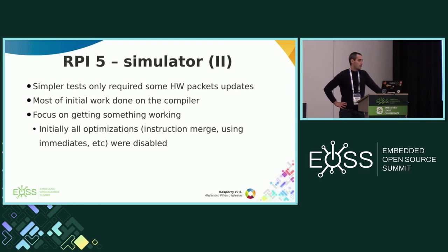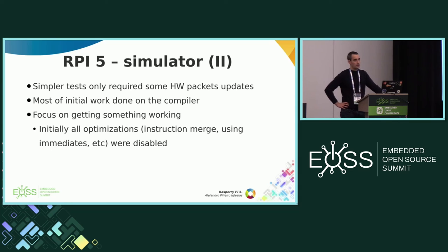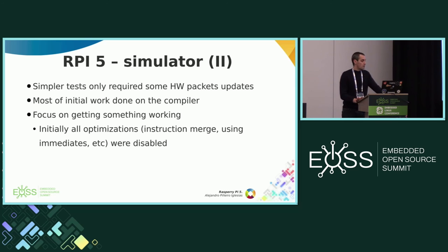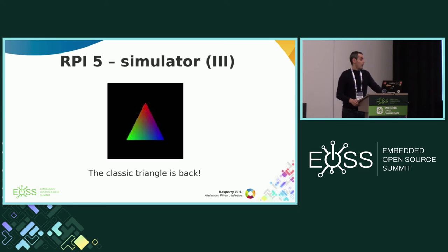Even after the simpler tests only required some hardware packet updates, it still required a lot of changes in the compiler. It was relatively easy to update the hardware packets, but then it required a lot of work on the compiler. The focus at the beginning was getting something working. For example, this GPU allows running two instructions at the same time in some situations, which requires considering instruction dependencies and hardware requirements — but at that point all those optimizations were disabled.